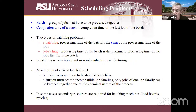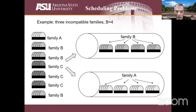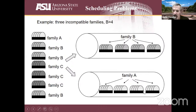In some early process steps, different products can be batched together since they're building primary layers common to many parts, with customization happening later. In some cases secondary resources are also needed for the batching machines. It's not always the right thing to make a full batch — depending on the performance metrics, it's often best not to run a full batch. Lars Mönch recently published a paper in EJOR reviewing the literature, covering about 300 papers on batch scheduling problems.